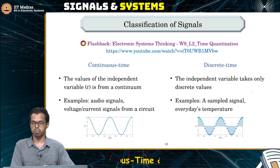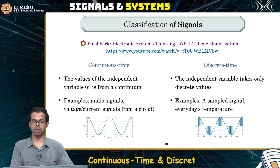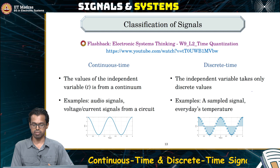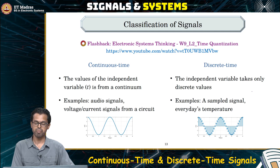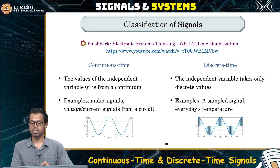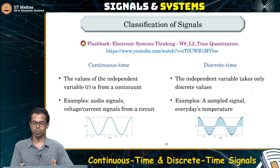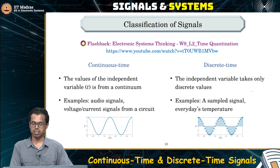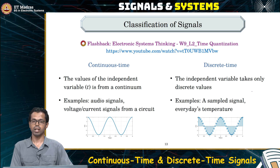Now that we have understood how to represent the signal graphically and analytically, we will see how signals are classified. The first and most important classification is the continuous time and discrete time classification. We can divide signals into two different classes: the continuous time class and the discrete time class.